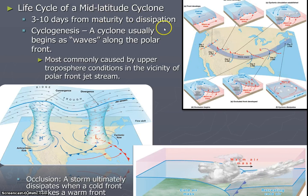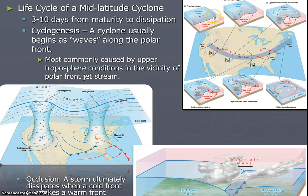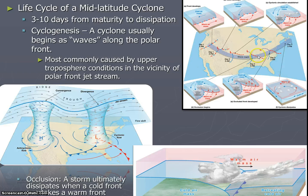The life cycle of the mid-latitude cyclone is approximately 3 to 10 days from maturity to dissipation. On day one, you have the cold air mass and the warm air mass with a stationary front. As it progresses, you get a more distinct cold front and warm front. The cold front moves more quickly, overtaking the warm front until you have an occluded front. Once the whole thing becomes occluded, the storm dissipates — in this diagram, it only took 3 days for the entire storm to cross the United States.